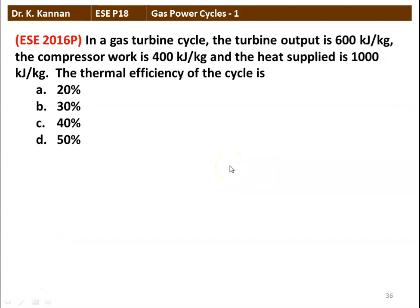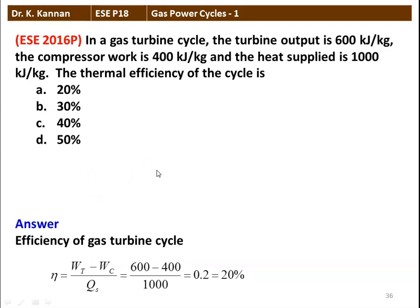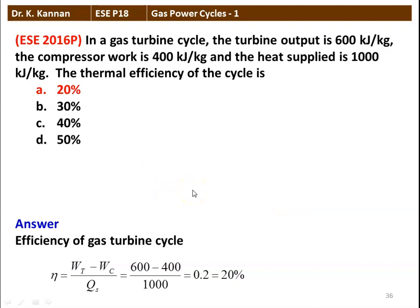The next is a question from the 2016 question paper. In a gas turbine cycle, the turbine work output is 600 kJ per kg, the compressor work is 400 kJ per kg, and heat supplied is 1000 kJ per kg. The thermal efficiency of the cycle — options are 20%, 30%, 40%, and 50%. Efficiency eta = (turbine work − compressor work) / heat supplied = (600 − 400) / 1000 = 0.2, which is 20%. So the answer is option A.